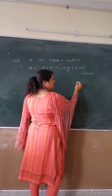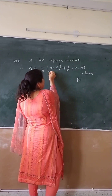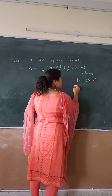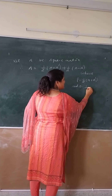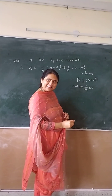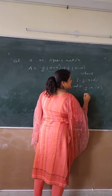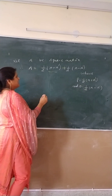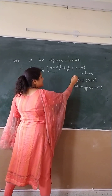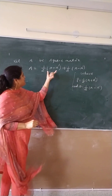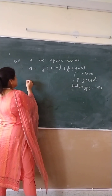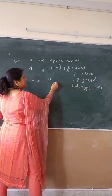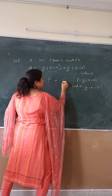Where P is equal to half of A plus A-dash, and Q is equal to half of A minus A-dash. Is it clear, students? It implies that P is this one and Q is this. Therefore A is equal to P plus Q.